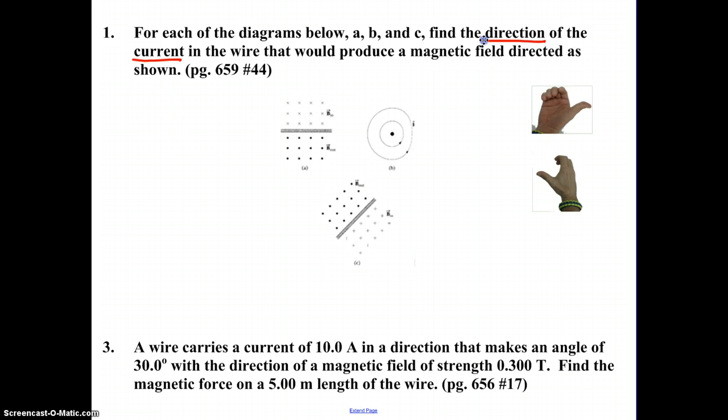We'll start with Diagram A, and Diagram A shows a magnetic field that's going into the page above the wire and out of the page below the wire. So the hand rule we're using here is the right hand rule where our thumb points in the direction of the current and our fingers curl in the direction of the magnetic field around the wire.